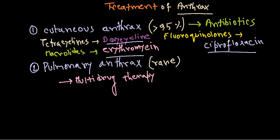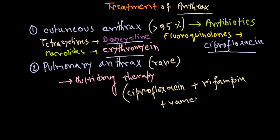In case of pulmonary anthrax, we can use ciprofloxacin plus rifampin plus vancomycin. In most cases nowadays, this is the recommended format. Ciprofloxacin along with rifampin and also vancomycin.